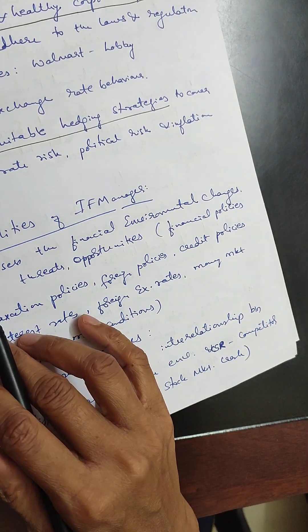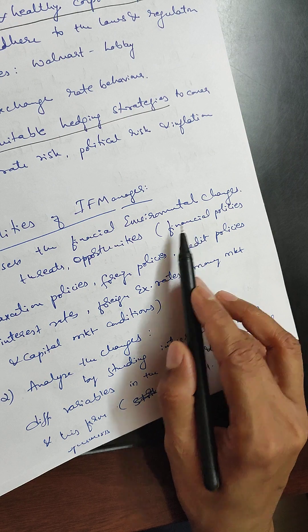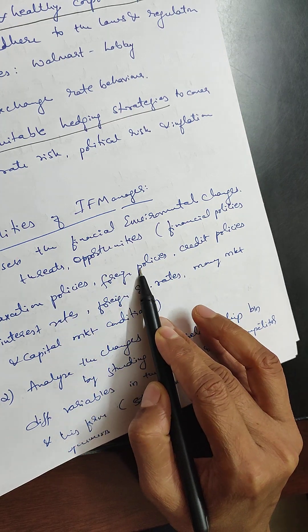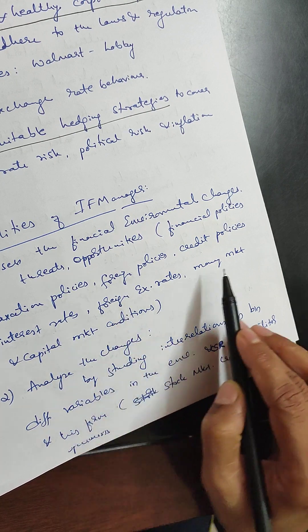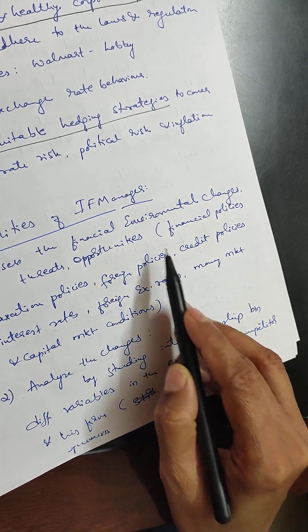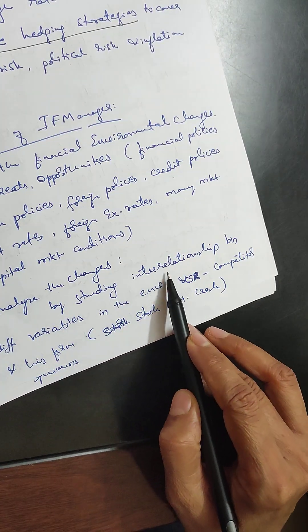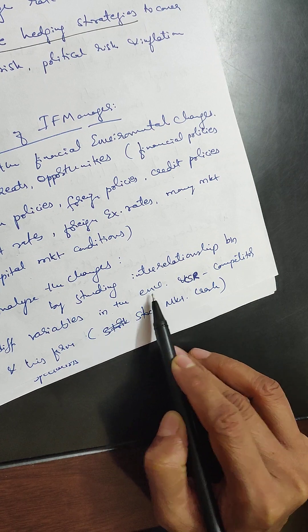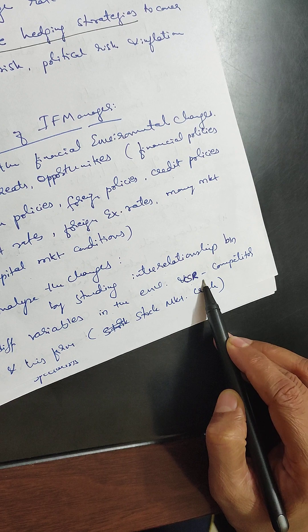Responsibilities of international financial managers include: assessing financial environment changes — threats and opportunities — taxation policies, foreign policies, credit policies, interest rates, foreign exchange rates, money market and capital market conditions. They also analyze changes by studying interrelationships between different variables in the environment, and identify political relationships that can create corporate social responsibility.